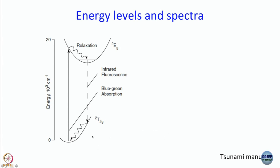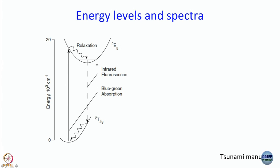The energy level diagram used here is from the Tsunami manual. The ground state is a doublet T2g and the excited state is a doublet Eg. You excite at around 530 nm; post-excitation there is an ultrafast relaxation to the zero vibrational level, and emission occurs from there. The minima of the two potential energy surfaces are not in the same position, so the emission energy gap is approximately 800 nm equivalent.